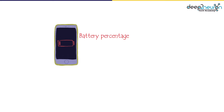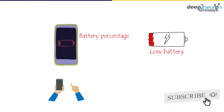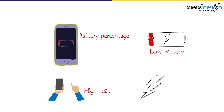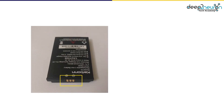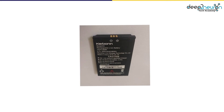Have you wondered how we can see the battery percentage on the top of the screen? If there is a low amount of battery, the mobile alerts with a notification. In some smartphones, the heat level of the mobile is also displayed. If we charge the phone at a high voltage, it shows a danger alert. All of this is based on the number of terminals in the battery.